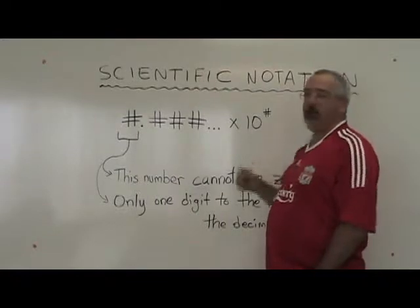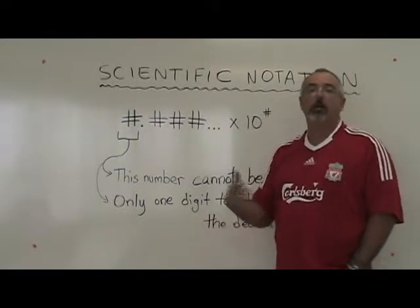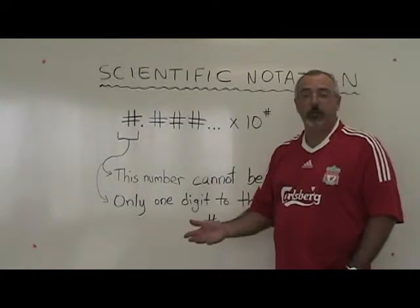Multiplying by ten to the power of a number means you're multiplying by one thousand, or by a hundred, or by a million, a power of ten.